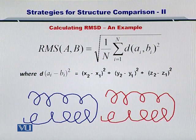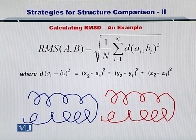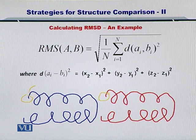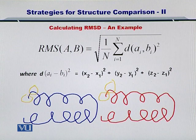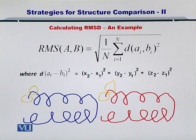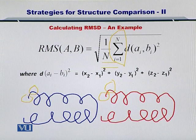This helps you estimate the distance between the two proteins. In this case, the red and blue proteins — this alpha carbon will be compared with the corresponding one in the other protein, and so on and so forth. One alpha carbon at a time is compared with the corresponding alpha carbon in the other protein and the distance computed. Such distances are all summed up and then averaged over the number of alpha carbons in the backbone.